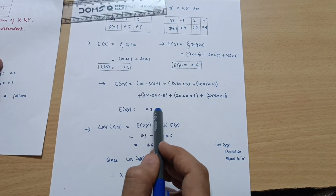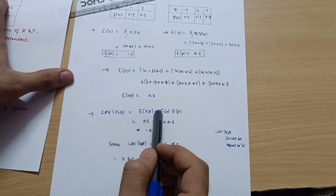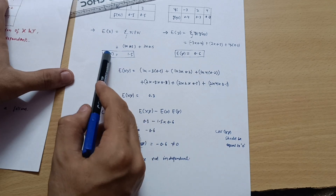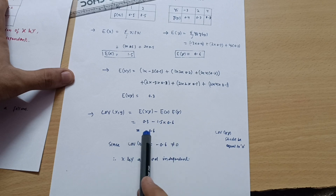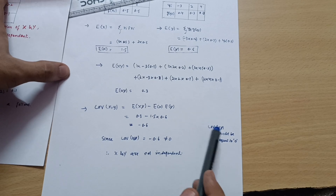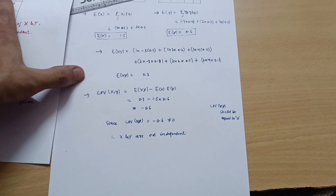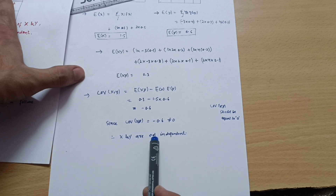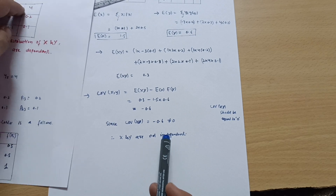Covariance(X, Y) = E(XY) − E(X)·E(Y) = 0.3 − 1.5 × 0.6 = 0.3 − 0.9 = −0.6. For x and y to be independent, the covariance must equal 0, but we are getting −0.6, which is not equal to 0. Therefore, x and y are not independent — they are dependent.